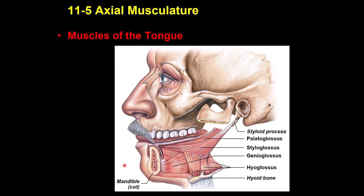Here are the muscles of the tongue. There are four different muscles. This is the mandible, this area is called genio, and this bone is called the hyoid bone. One muscle is called genioglossus, which causes protrusion and depression of the tongue. This is called hyoglossus, which causes retraction and also depression of the tongue.